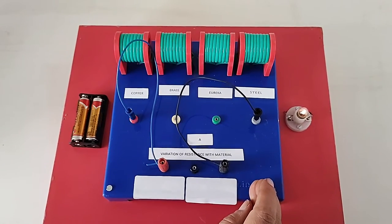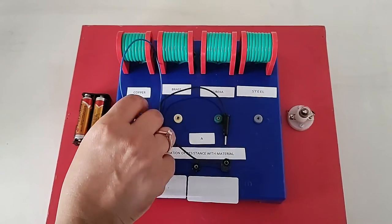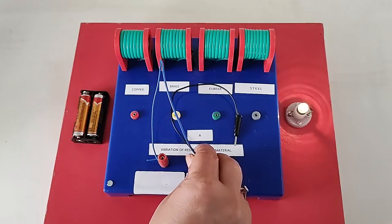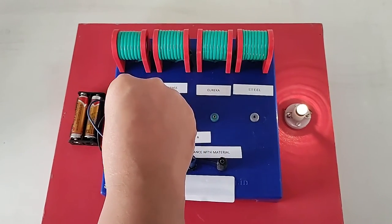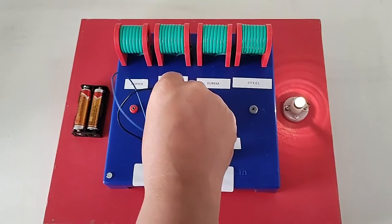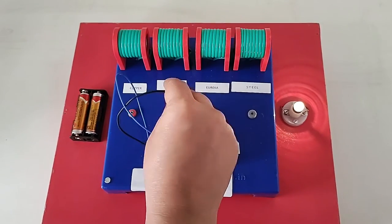When the material changes, the resistance in the circuit will change. It is the highest in copper than in brass as compared to brass.